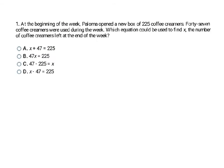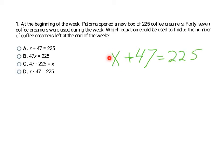Our first problem gives us a word problem to translate into an equation — we're not solving yet, just translating. It says: at the beginning of the week, Paloma opens a new box of 225 coffee creamers. 47 coffee creamers were used during the week. Which equation can be used to find x, the number of coffee creamers left at the end of the week? If x is the number left, 47 is the number used, and 225 is the total, then 47 plus x equals 225. So the equation in letter A is the one to use.